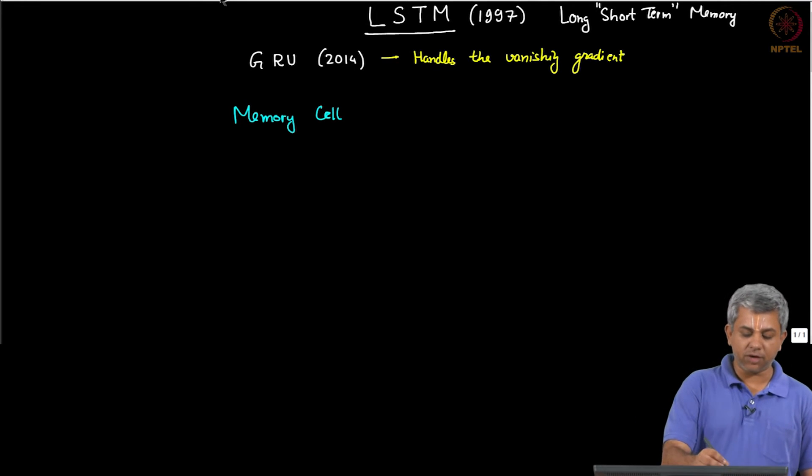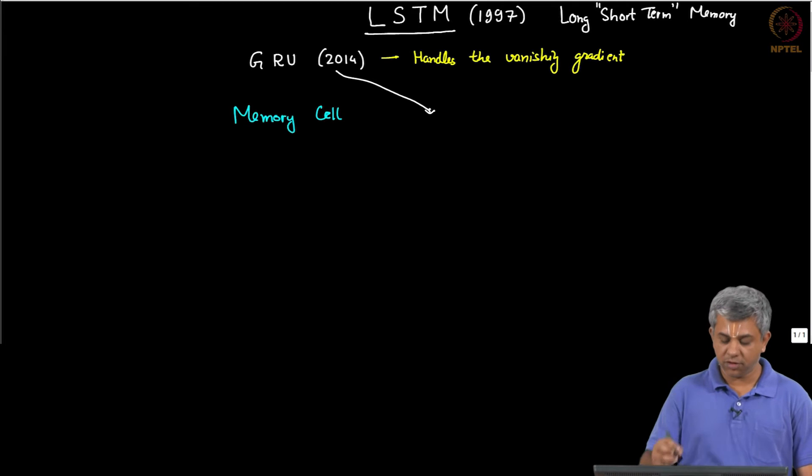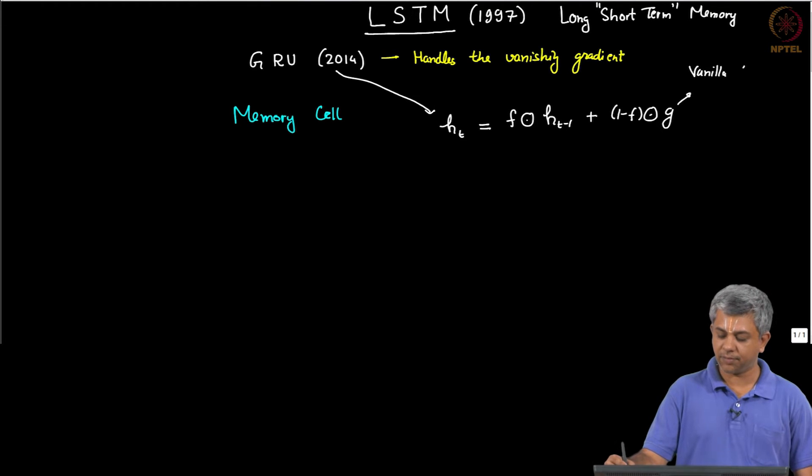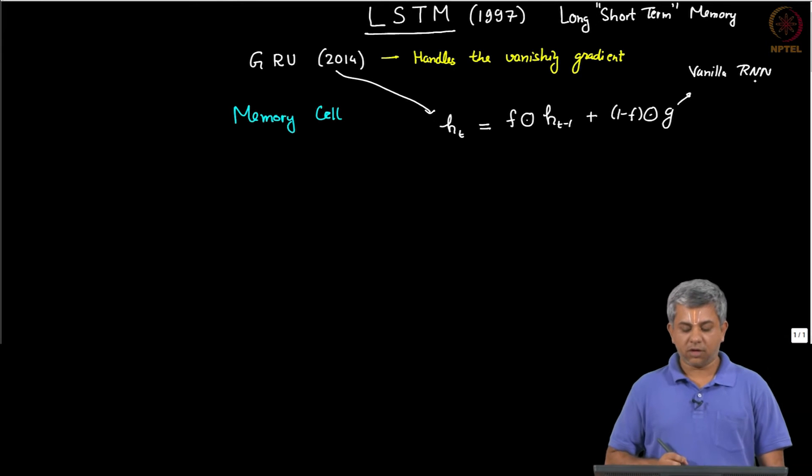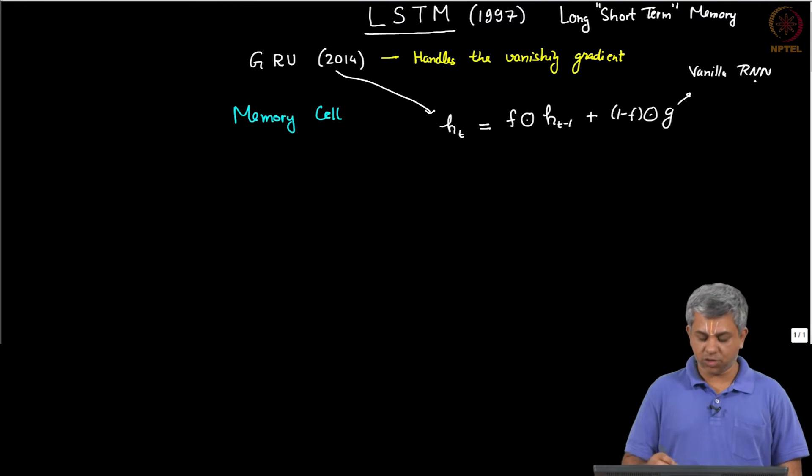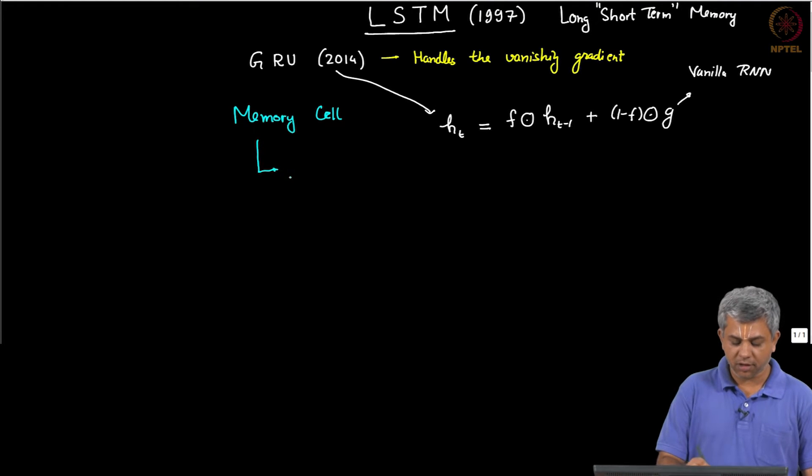So when we were dealing with GRU or the simplified GRU we had something like H_t is F times H_{t-1} plus 1 minus F times G, where G was the output of the vanilla RNN. The idea there was to retain some portions of your old calculations into the new ones. In the case of LSTM we will be actually using a separate cell altogether, this is a memory cell.